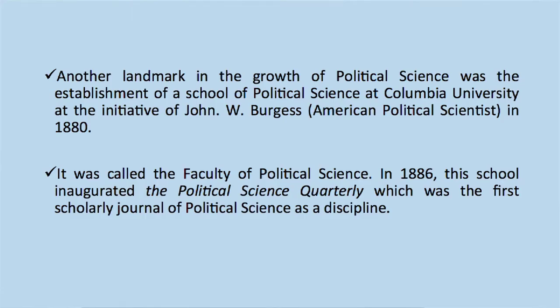Another landmark in the growth of political science was the establishment of a school of political science at Columbia University, at the initiative of John W. Burgess, an American political scientist, in 1880. It was called the Faculty of Political Science. In 1886, this school inaugurated the Political Science Quarterly, which was the first scholarly journal of political science as a discipline. It heralded a new era in the growth of the discipline as it gave scholars a new platform to express their views in writing.